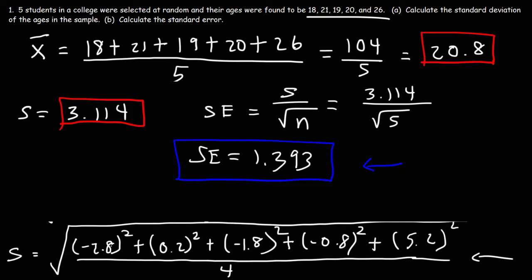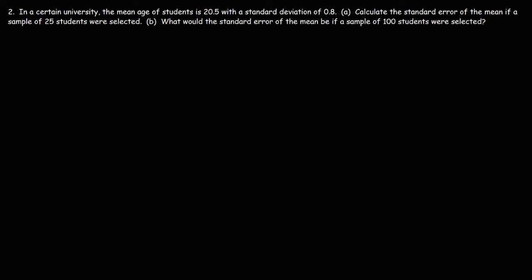So now let's move on to our next problem. Number 2. In a certain university, the mean age of students is 20.5, with a standard deviation of 0.8. Part A. Calculate the standard error of the mean if a sample of 25 students were selected.